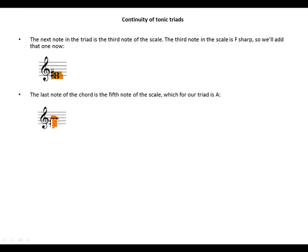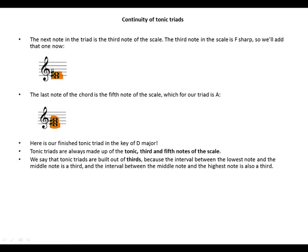Three notes. Here's our finished tonic triad in the key of D major. Tonic triads are always made up of the tonic, third, and fifth notes of the scale. We say that tonic triads are built out of thirds because the interval between the lowest note and the middle note is a third, and the interval between the middle note and the highest note is also a third.